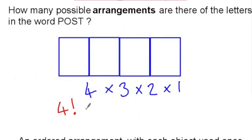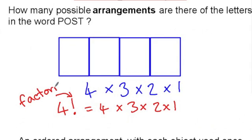So four exclamation mark we would say in mathematics is four factorial. And it means four times three times two times one. So this symbol here in maths is not an exclamation mark. It is a factorial symbol.